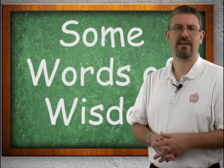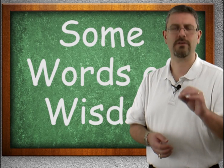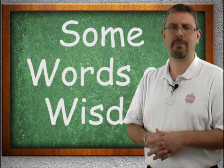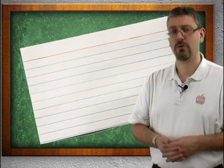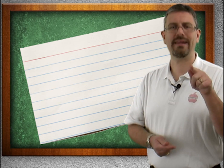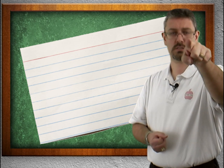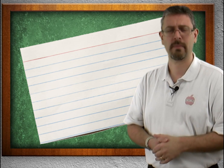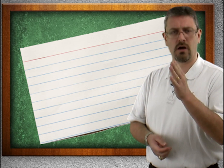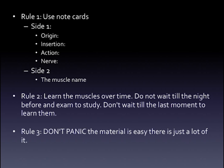Finally, here is my advice to you on how to survive the muscular system. You have heard me talk about note cards and index cards in the past — if you have not listened to my advice so far, do so now. Get some index cards; you will need these, especially for the muscular system. On one side of the card, write the name of the muscle. On the other side, write the origin, the insertion, the action, and the nerve that goes to it. Take it with you wherever you go.